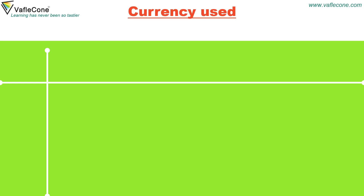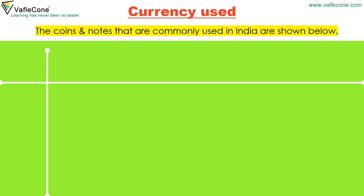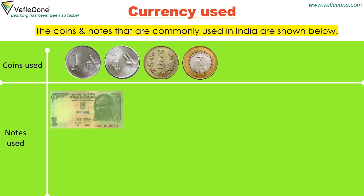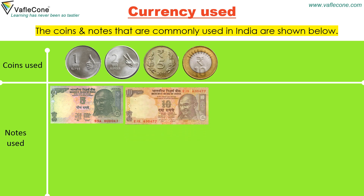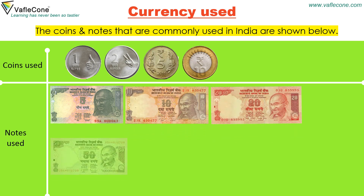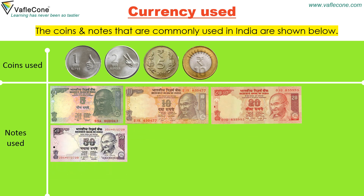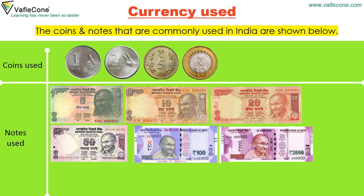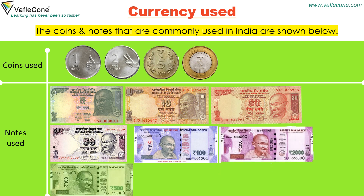Currency used. The coins and notes that are commonly used in India are shown below. Coins used are 1 rupee, 2 rupees, 5 rupees, and 10 rupees. Notes used are 5 rupees, 10 rupees, 20 rupees, 50 rupees, 100 rupees, 500 rupees, and 2000 rupees.